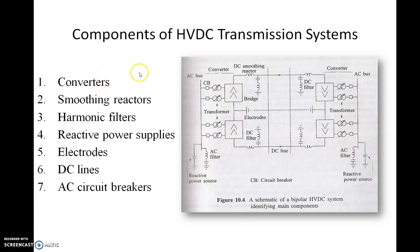The components are: converters, smoothing reactors, harmonic filters, reactive power supplies, and electrodes. Electrodes are required for grounding — on both sides these connections are grounded through electrodes. Of course, AC circuit breakers are also required.